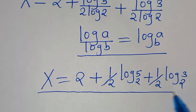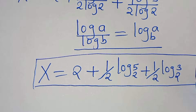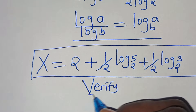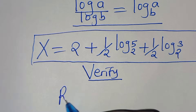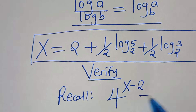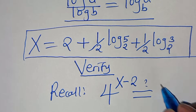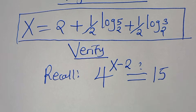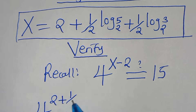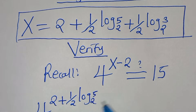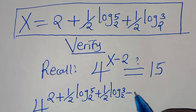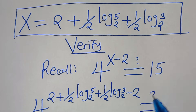So this is the value of x: x equals 2 plus one half log₂5 plus one half log₂3. Now let's verify that this value of x satisfies the equation. Recall we have 4 to the power of x minus 2, which should equal 15. Substituting the value of x, we have 4 to the power of 2 plus one half log₂5 plus one half log₂3, minus 2, and this should give us 15.